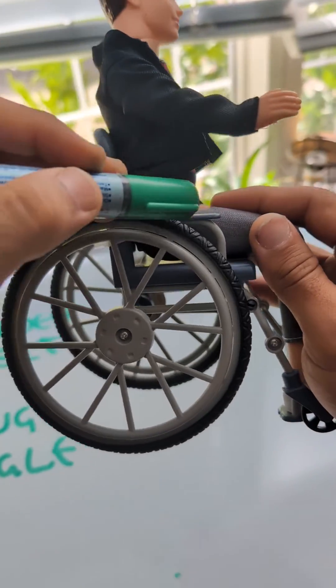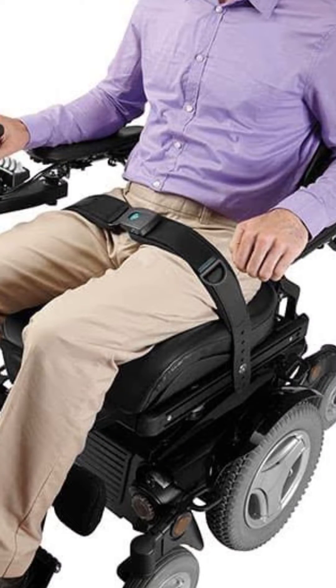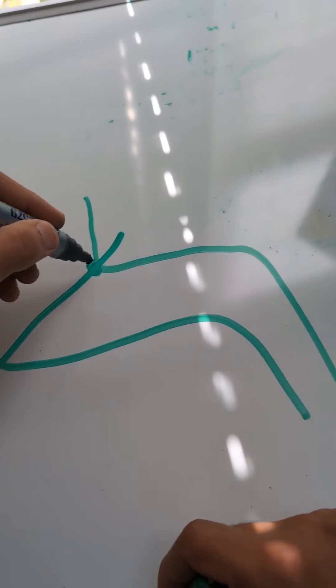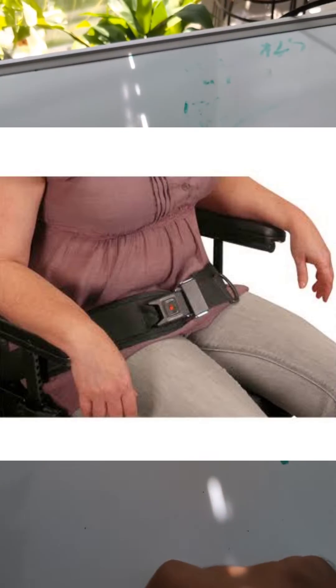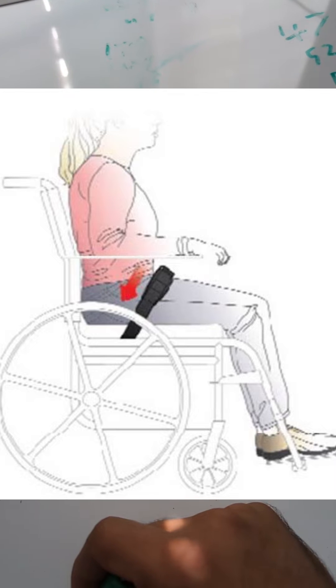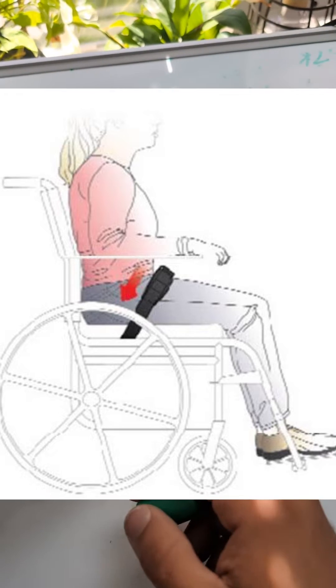So a better way to angle it is 60 degrees or perhaps even 90 degrees. If you imagine mounting a belt at a 45-degree angle, the hips can still slide under there quite well. But if it's at a 60-degree angle, like over here, that actually holds the pelvis back into the chair.